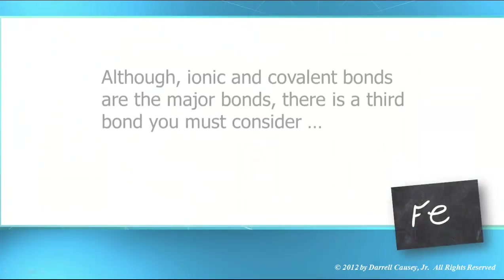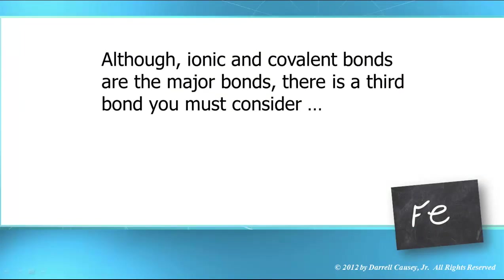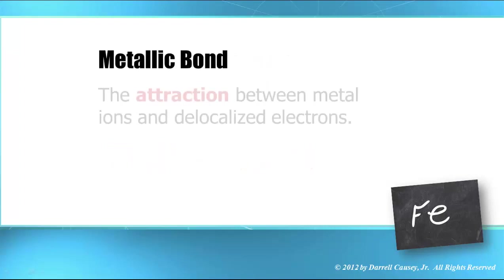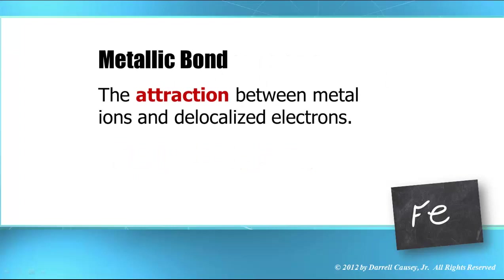Although ionic and covalent bonds are the major bonds, there's a third type of bond that you must consider, and that's the metallic bond. The metallic bond isn't really a chemical bond, but it's still an attraction. It's attraction between the metal ions and delocalized electrons. What do we mean by that?